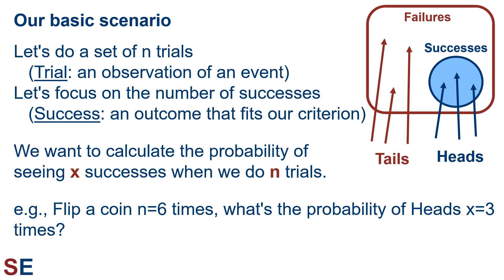Success and failure don't mean good or bad — they're arbitrary labels. The binomial probability method is used when we want to calculate the probability of seeing x number of successes when we do n number of trials. For example, if we flip a coin n equals six times, what's the probability of seeing heads x equals three times?